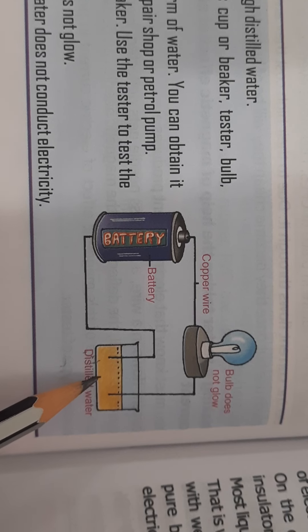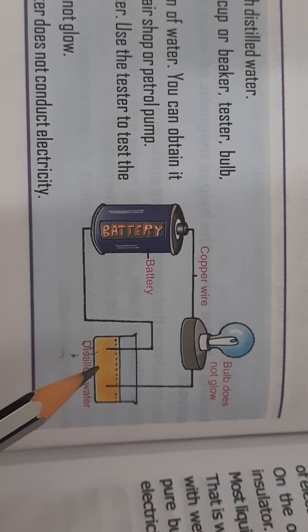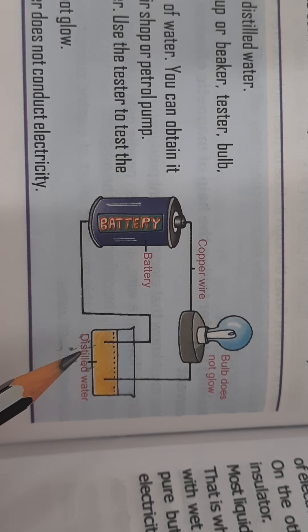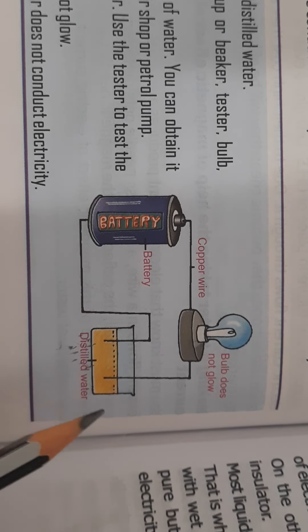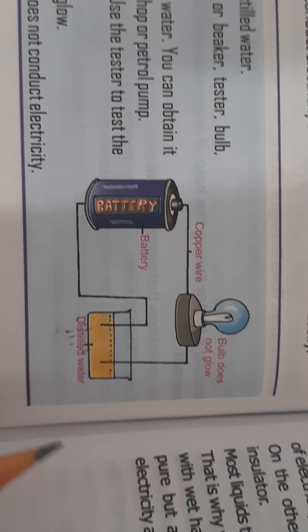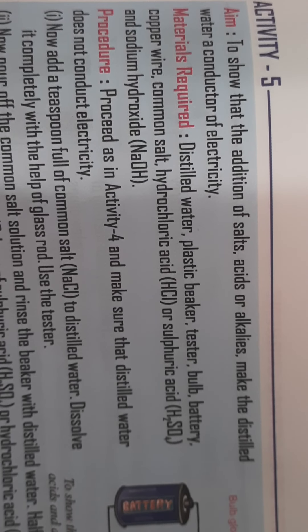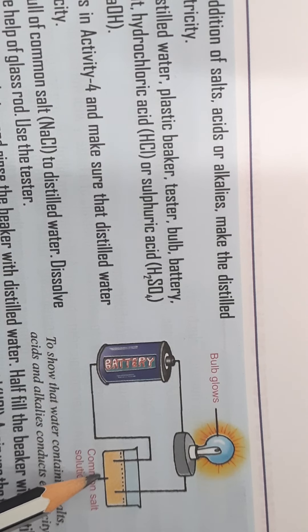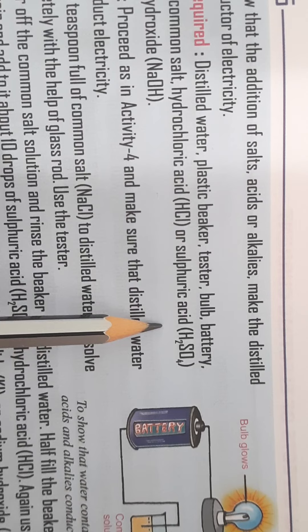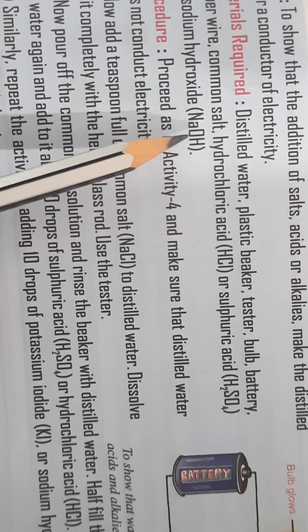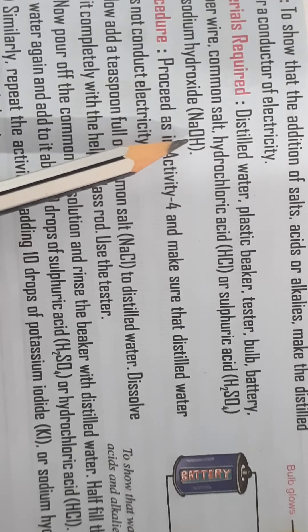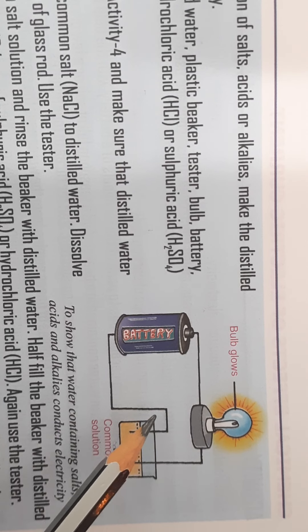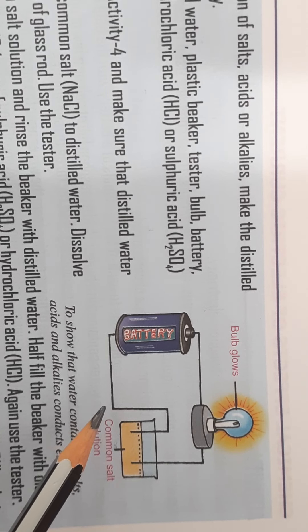If you add anything in distilled water like salt or any kind of acid or any kind of alkalis, then this distilled water will conduct electricity. I hope children that this is clear to all of you, since distilled water does not contain any kind of impurities or it is devoid of impurities, distilled water will not conduct electricity. Another activity is given to show that the addition of salts or acid. In this distilled water, if you add common salt or if you add hydrochloric acid, or sulfuric acid or sodium hydroxide, this is a base. If you add anything in this distilled water, you will see that the bulb will glow. This proves that common salt, acids or alkalis are all good conductors of electricity.